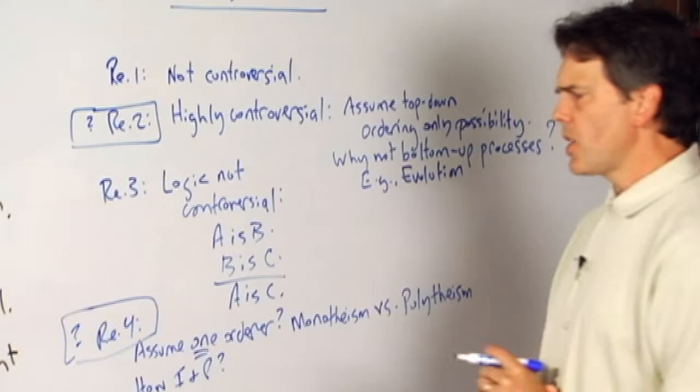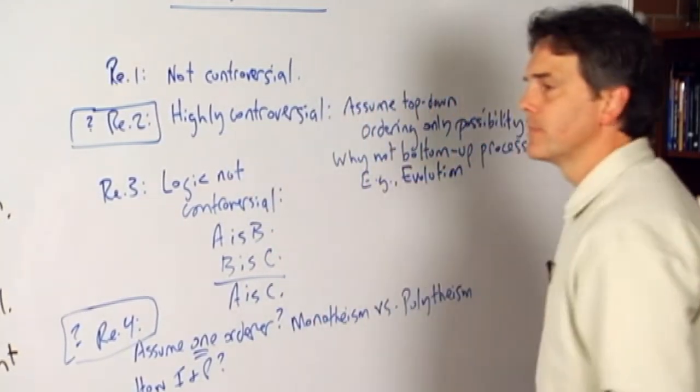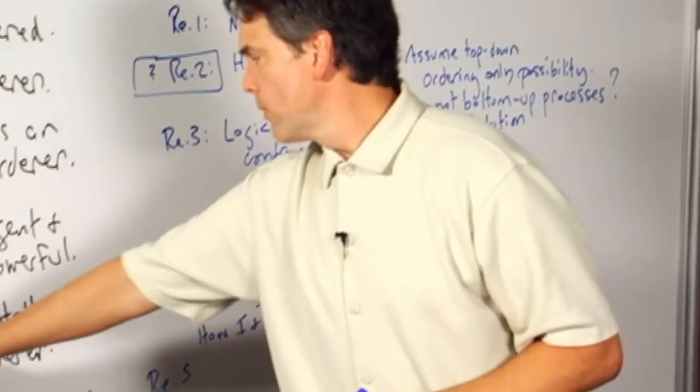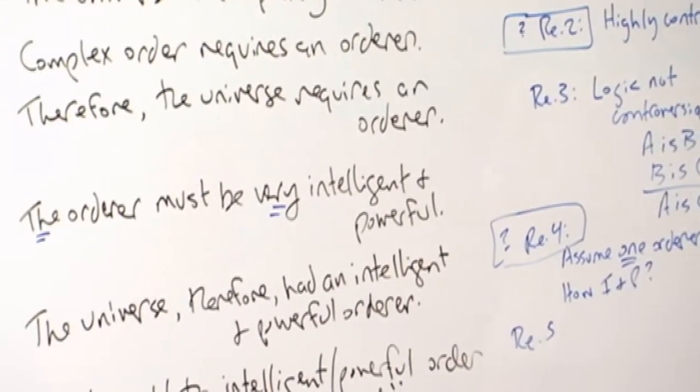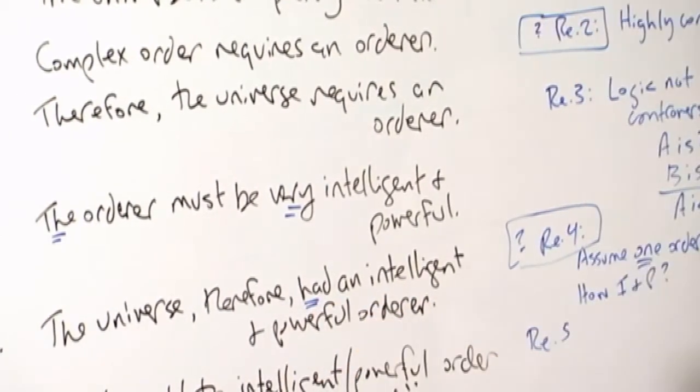The step five. Let's move on to that one regarding step five. The universe, therefore, had an intelligent, powerful orderer.